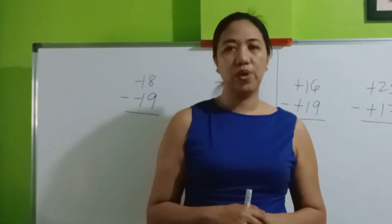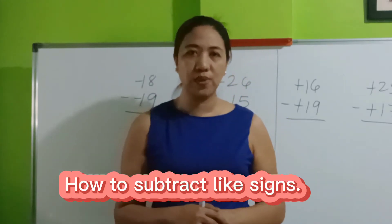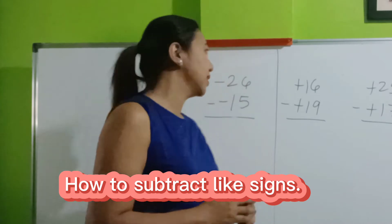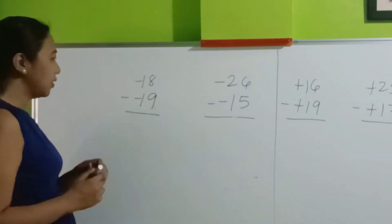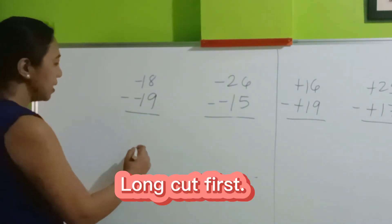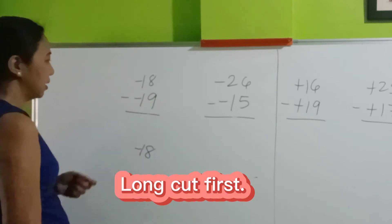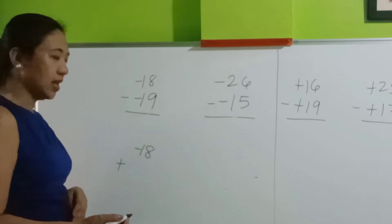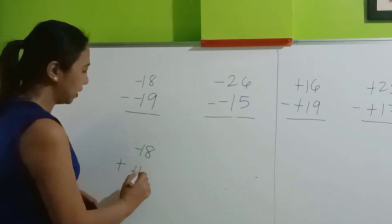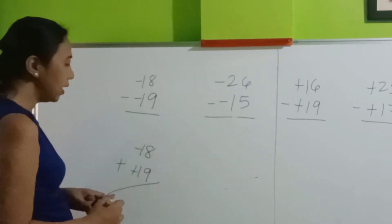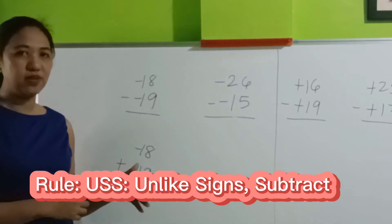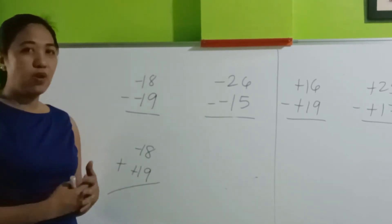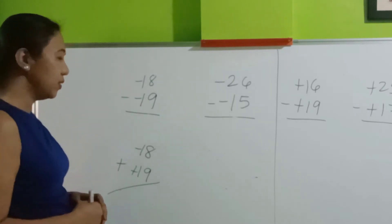This time, I'm going to teach you how to subtract integers with the same signs. Let's do the long cut first and then the shortcut. Negative 18 minus negative 19. Long cut: copy the minuend, then this becomes plus, and then turn this into its opposite sign, which is positive 19. Follow the rule in addition of integers. If they don't have the same sign, subtract and then follow the sign of the bigger number in its absolute value.